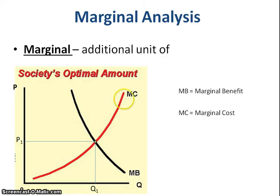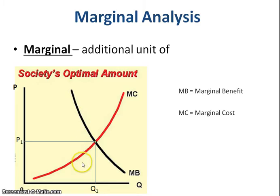If you were at a quantity prior to Q1, what that would mean is that the marginal benefit is greater than the marginal cost.